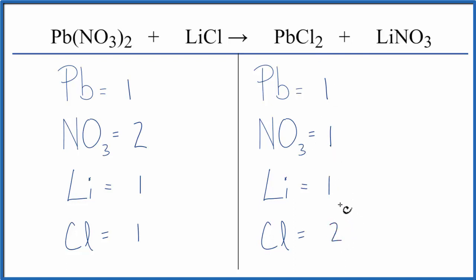Why don't we balance the chlorines first? We could put a 2 in front of the LiCl, then 1 times 2. That would give us 2 chlorines. Those are balanced.